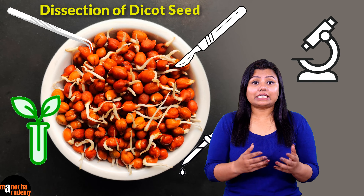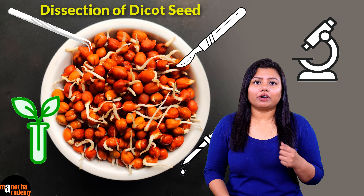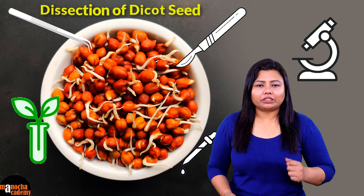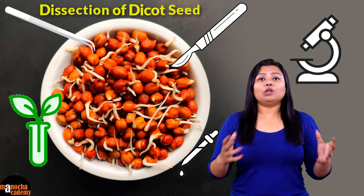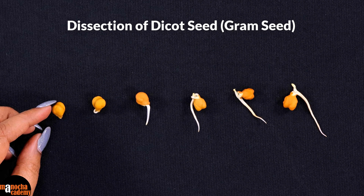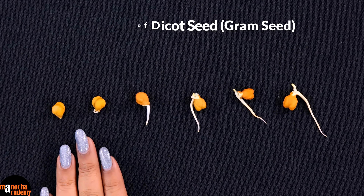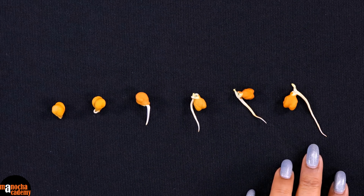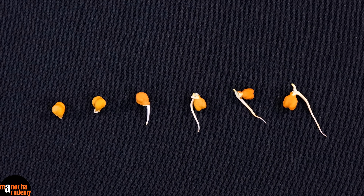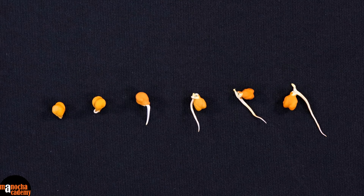Let us go through a dissection of a sprouted gram seed and look at its different parts to study them. I have taken a gram seed as you can see here. I am showing the different steps of growth of the radicle and the plumule, that is the embryo.